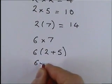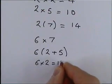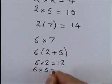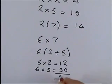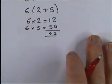Now, 6 times by 2 is 12. 6 times by 5 is 30. And if we add those two together, we get 42. So, it's one way around multiplying by the number 7.